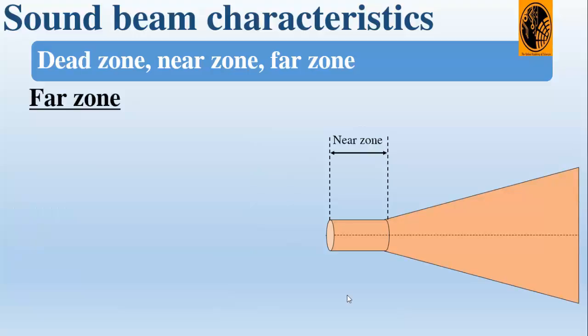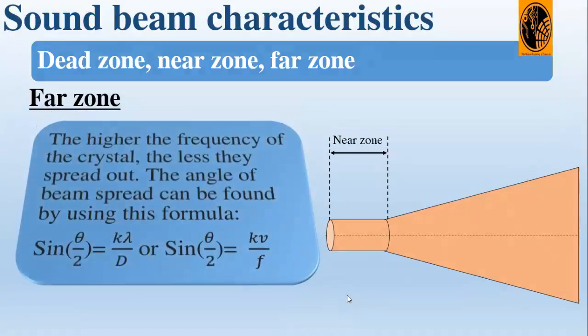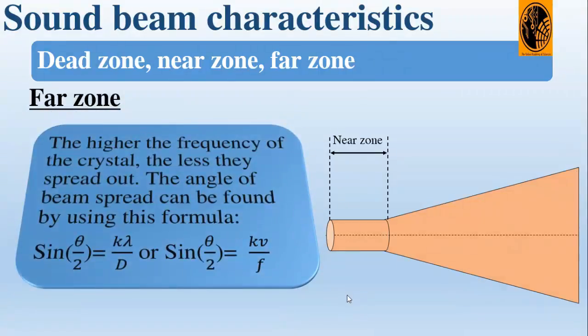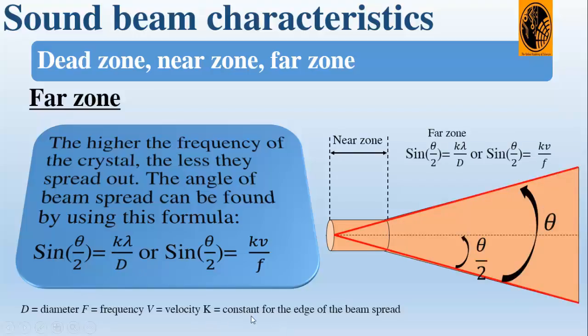Another characteristic of the sound beam is the far zone. The far zone can be worked out using the formula sin(θ/2) = Kλ/D, where D is the crystal diameter. K is a constant for the edge of the beam spread.